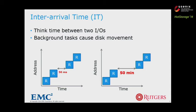Finally, we look at the property of inter-arrival time between requests. Modern storage systems usually contain lots of background tasks, and there is a possibility that the system state will change when the system is idle. For example, there is a higher chance that the disk head will not be in the same position if two consecutive requests are separated by 50 minutes compared to 50 milliseconds. The inter-arrival time property defines consecutive I/O requests with a long interval as non-sequential. We use the abbreviation IT to represent inter-arrival time.